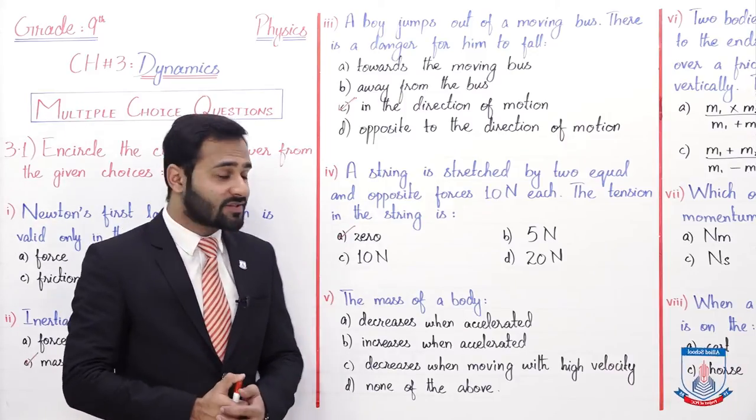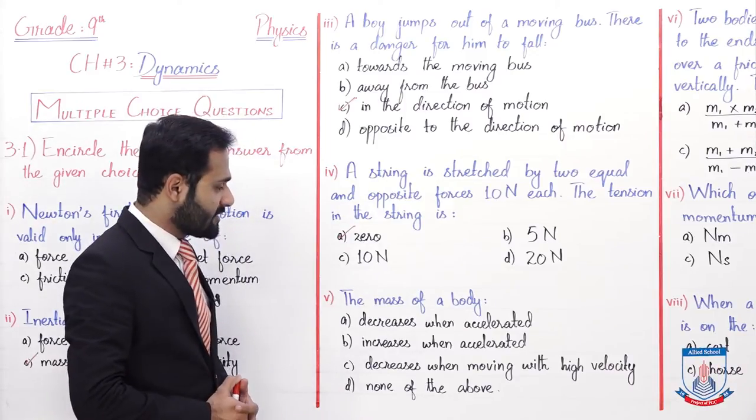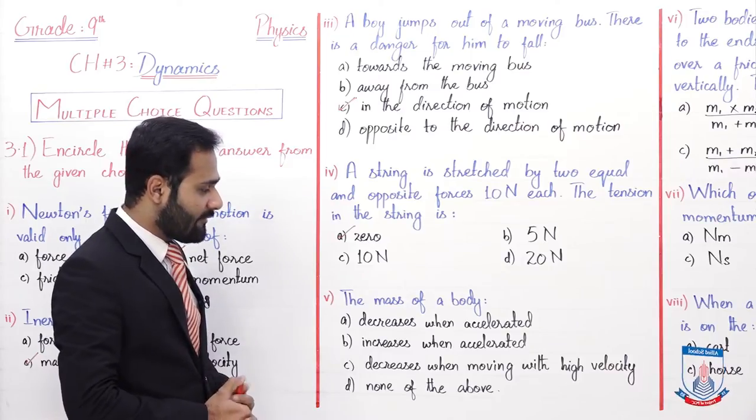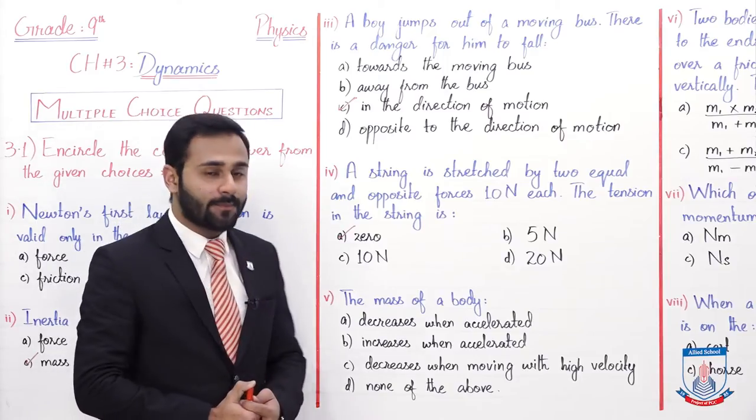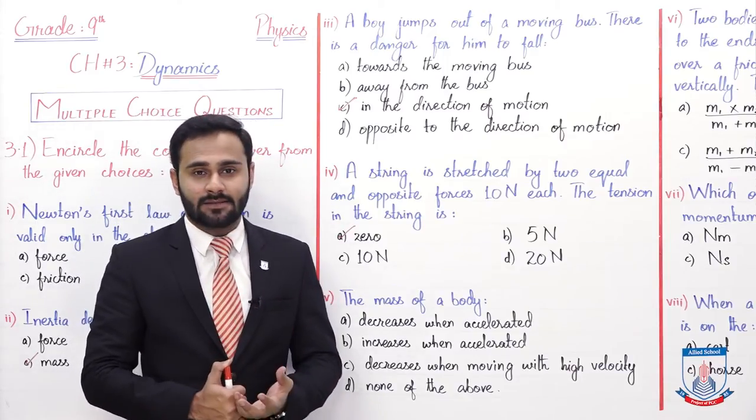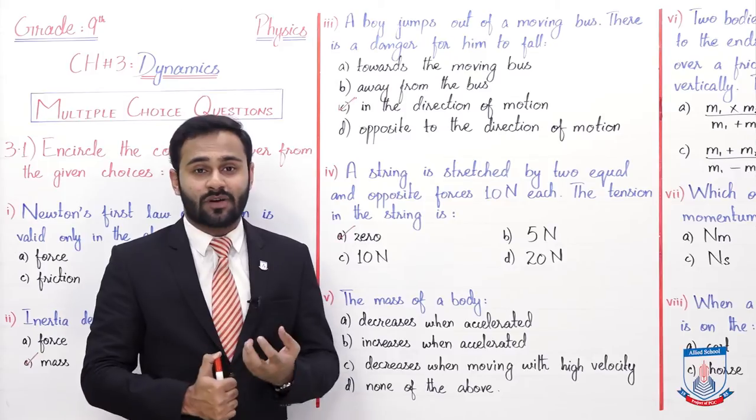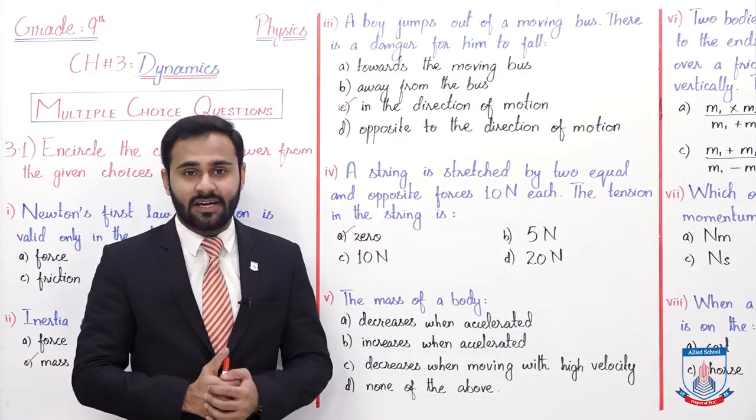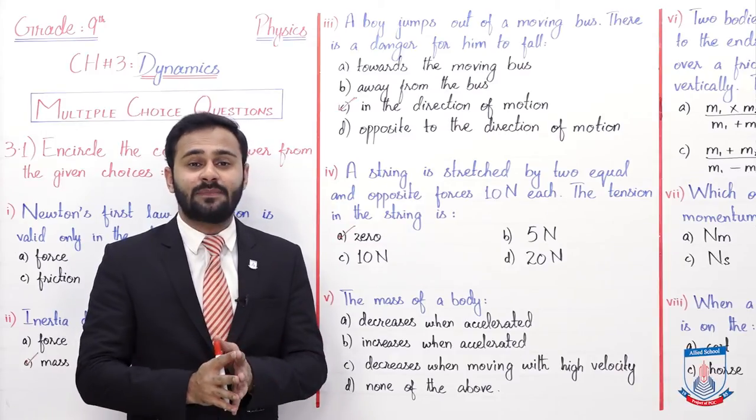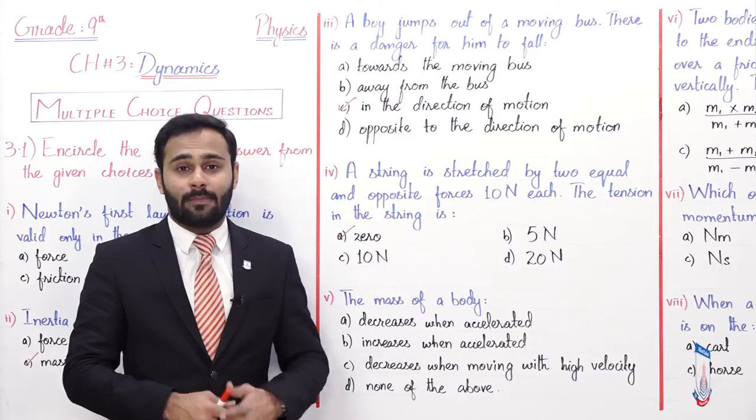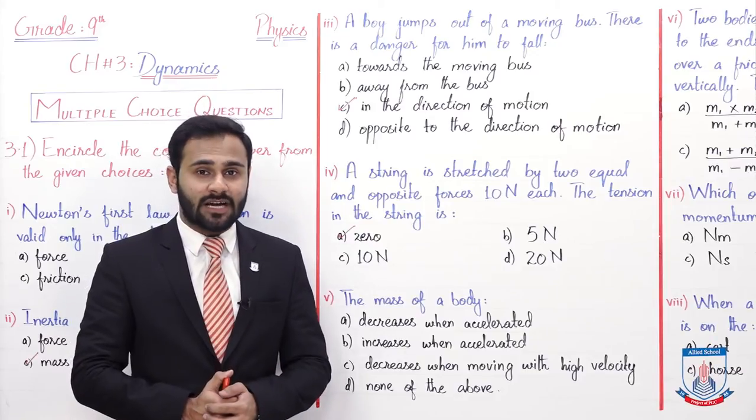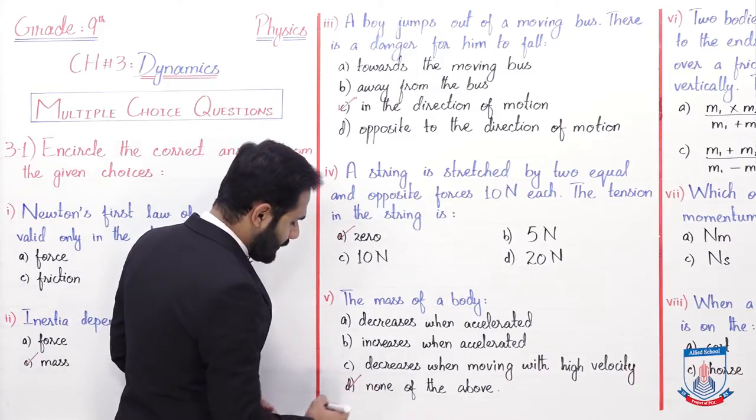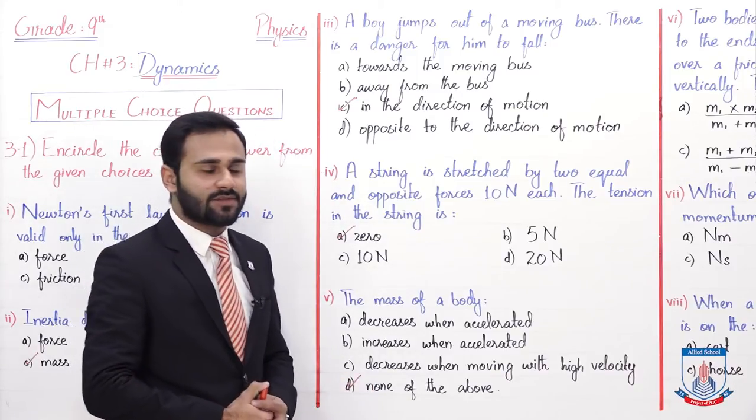And the fifth MCQ: the mass of a body A decreases when accelerated, B increases when accelerated, C decreases when moving with higher velocity, and D none of the above. As you know, mass never changes, mass remains the same. So that's why the option to choose is D none of the above.